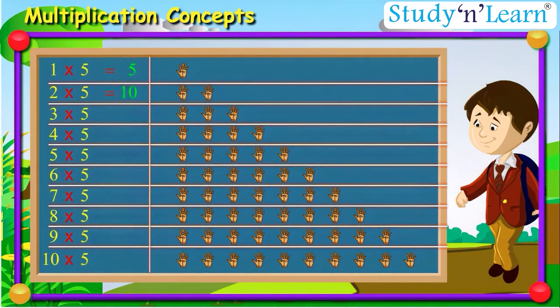Similarly, 3rd group has 3 hands, so it will be 3 into 5, which is 15 fingers.